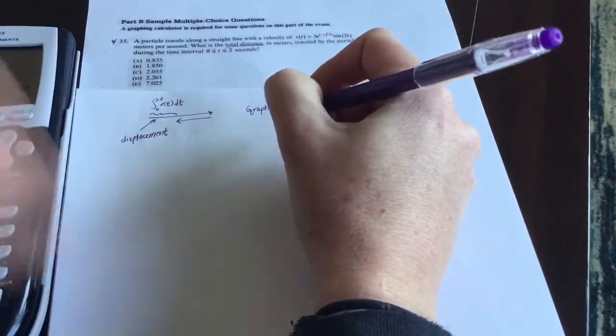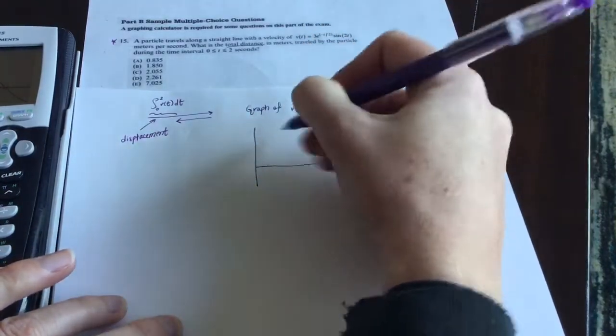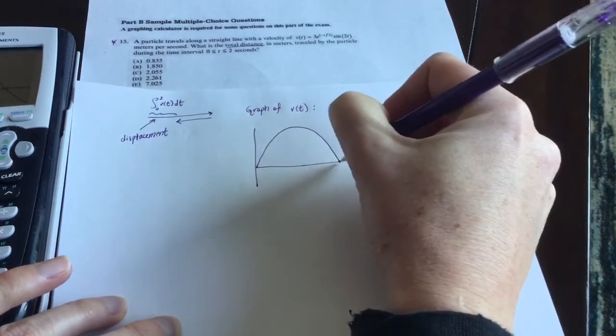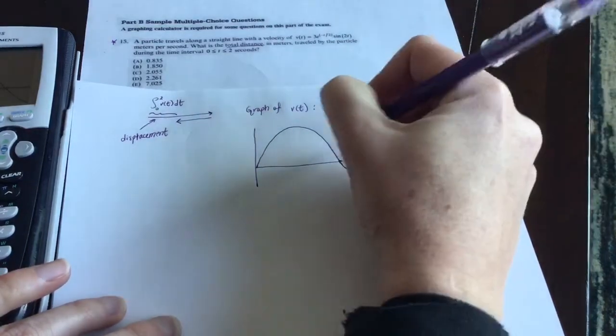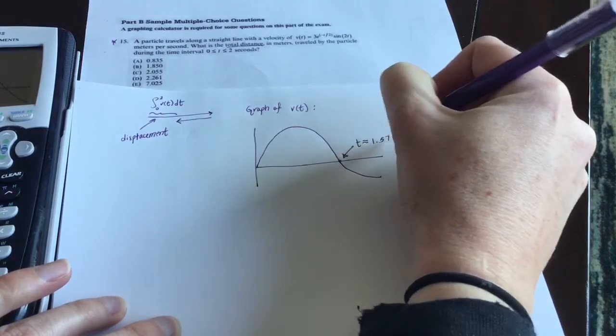And then we've got 1.570796. So I'm just going to sketch a little picture here just for explaining purposes. It's a multiple choice question. So nobody on the multiple choice test would care how you show your work. They just look at your answer.